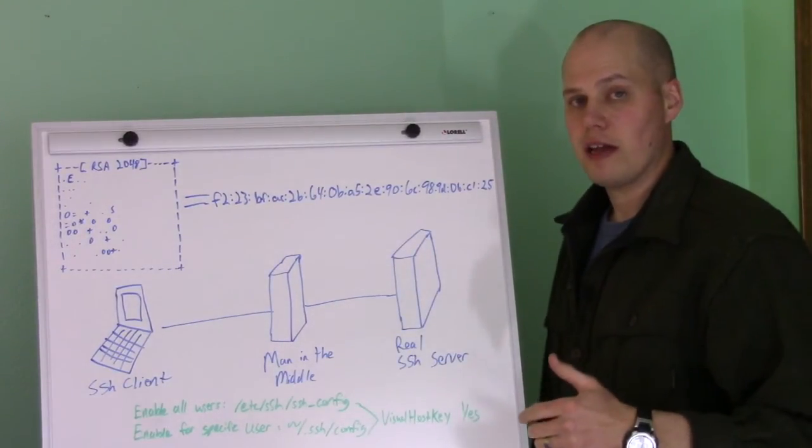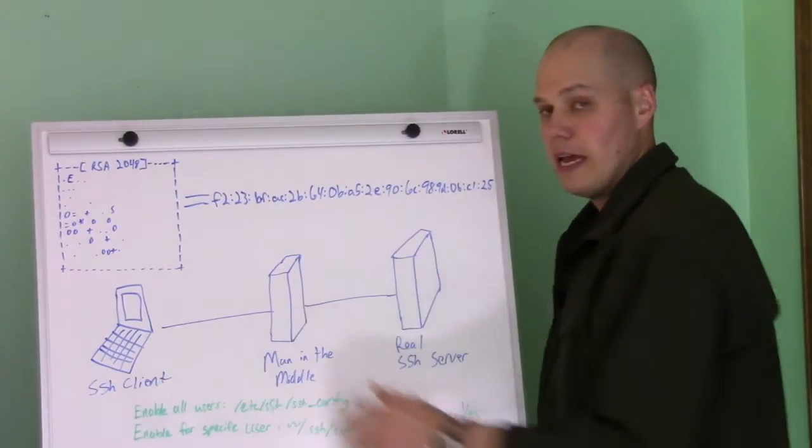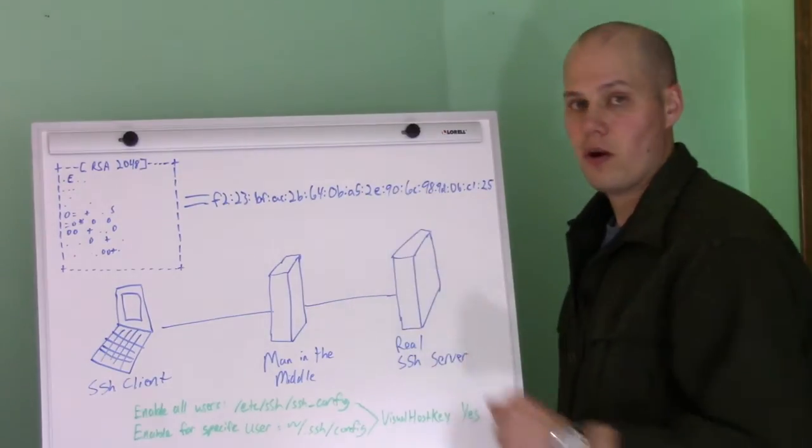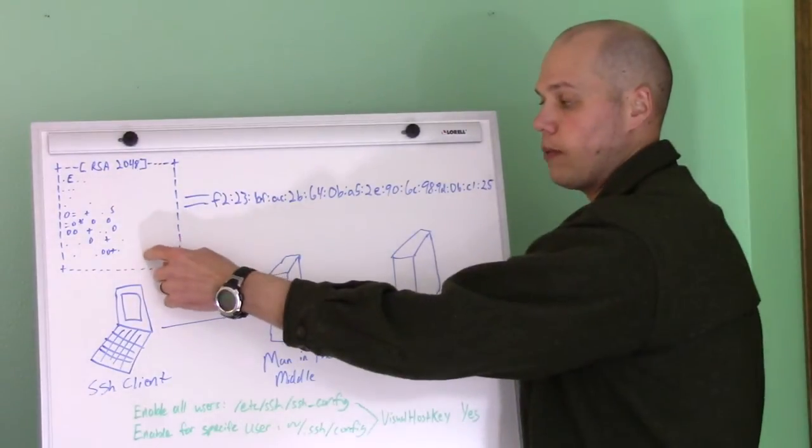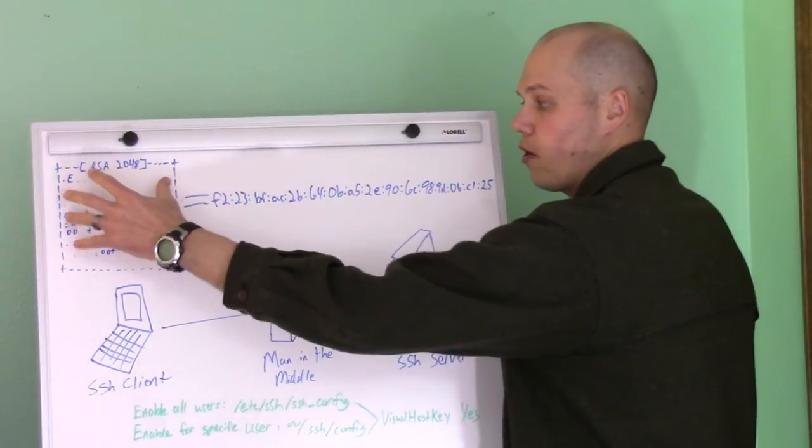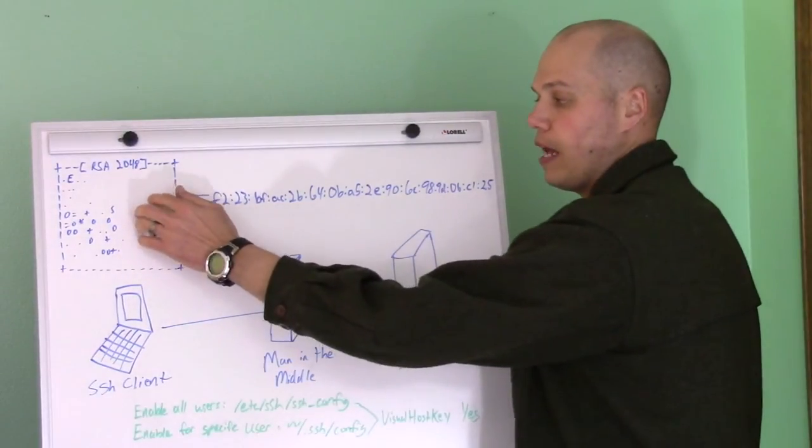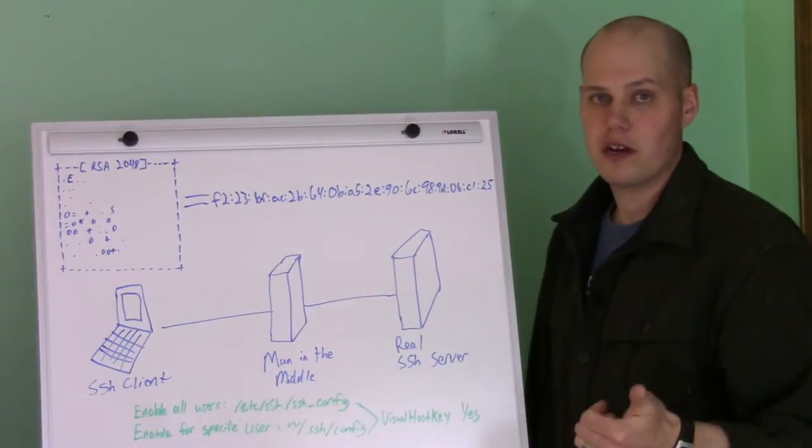And then if you ever needed to, like say, go on to a different client, SSH client, and connect to the server where you didn't have the known host file populated, you'd be prompted to verify, and if you enabled the visual feature, you would see the graphical representation of the key, and you'd be more likely to remember, yeah, this is what it looked like, rather than, yeah, this was the right key, just based on your memory.